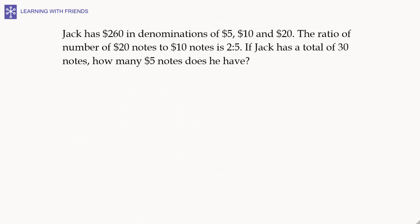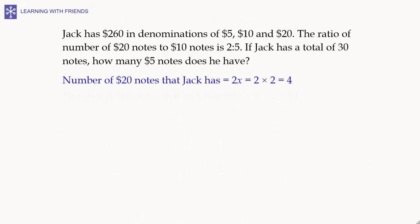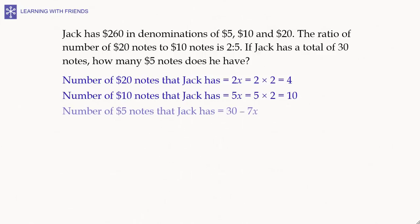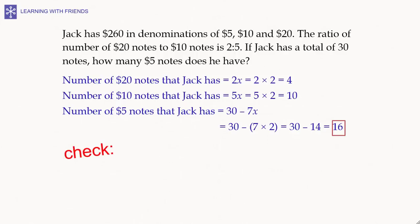Now that we have x equals 2, we can find the number of notes of each denomination. The number of 20-dollar notes is 2x, which is 2 multiplied by 2, equaling 4. The number of 10-dollar notes is 5x, which is 5 multiplied by 2, equaling 10. The number of 5-dollar notes is 30 minus 7x, which is 30 minus 14, equaling 16.